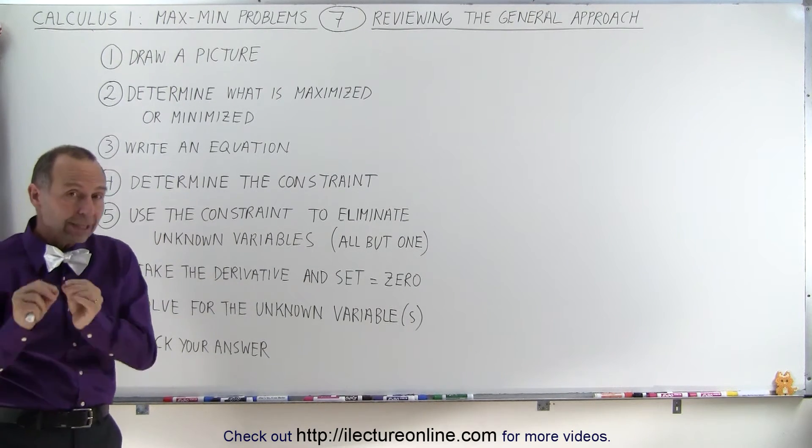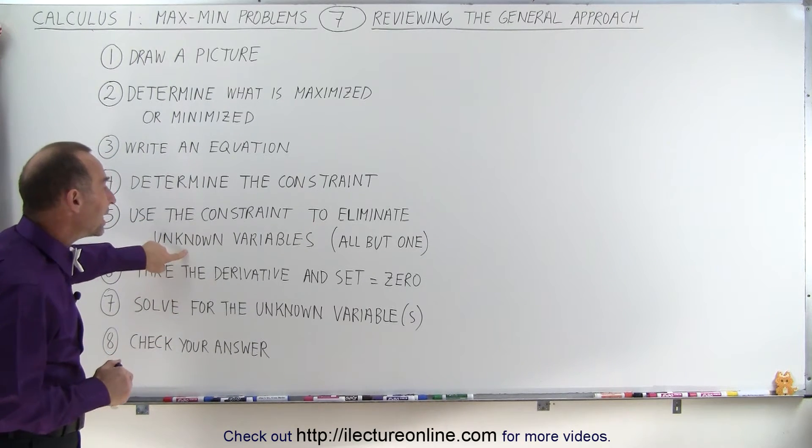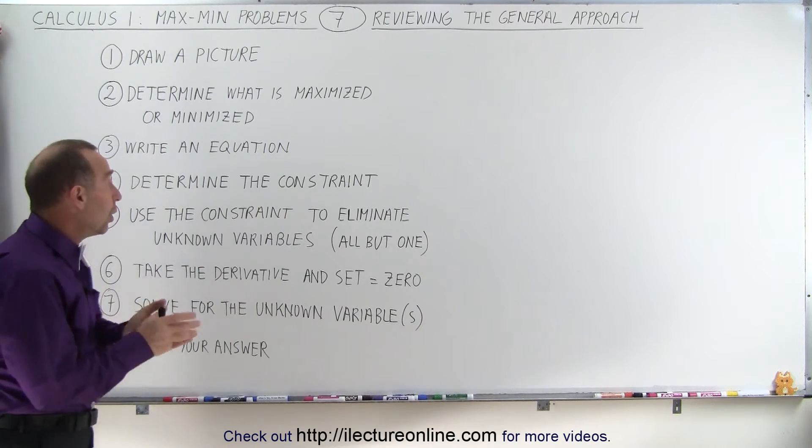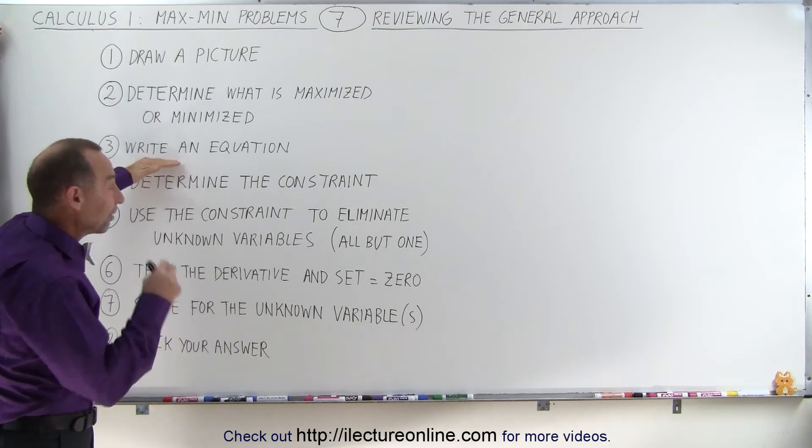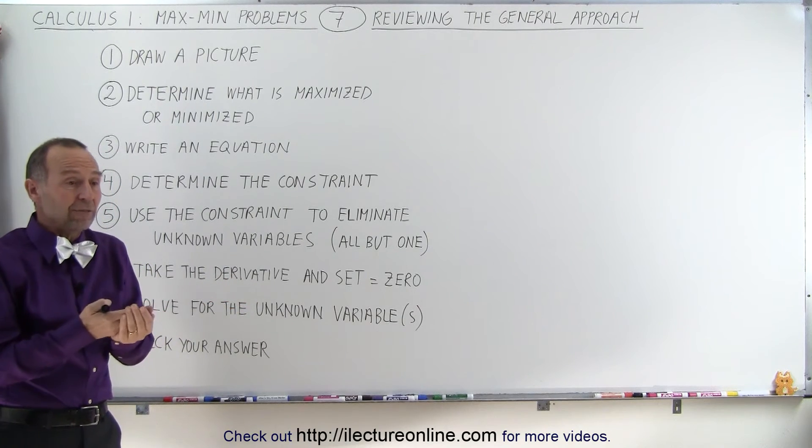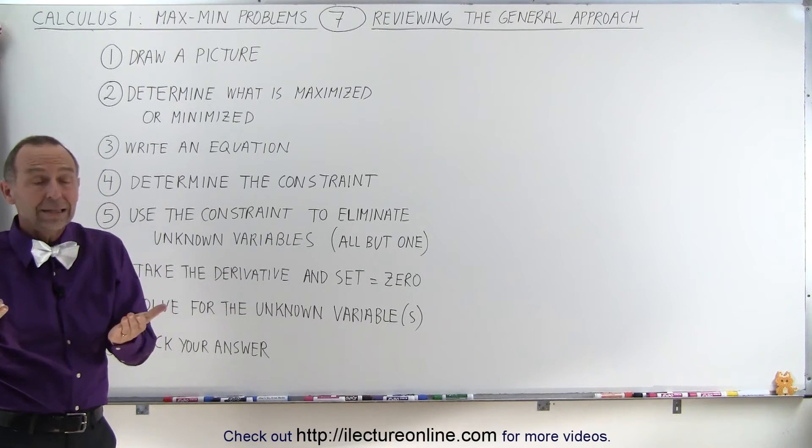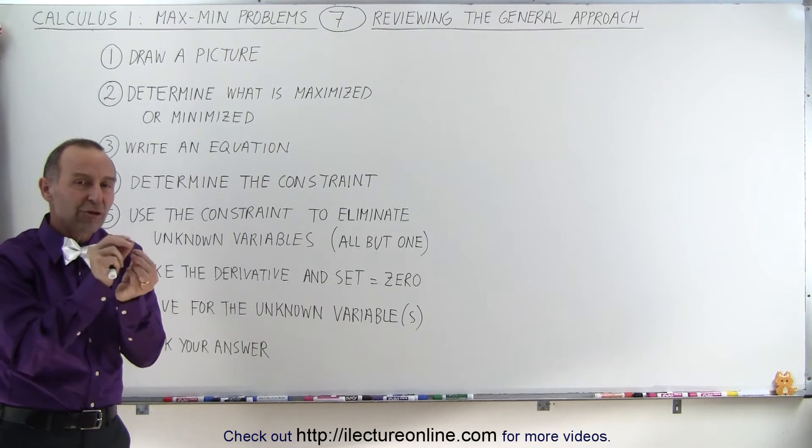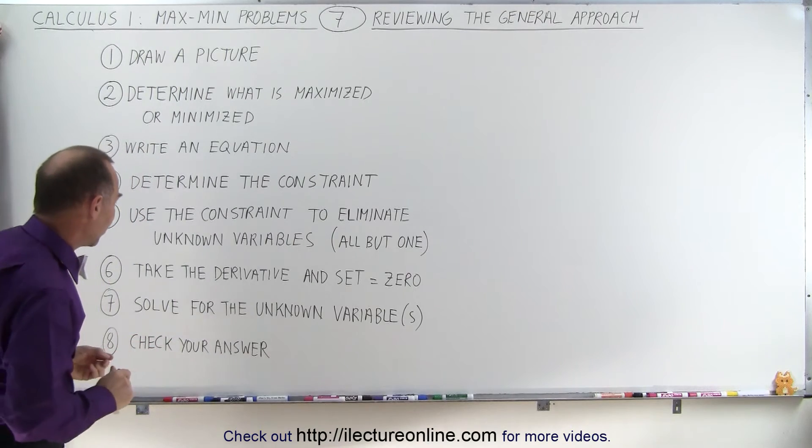Once you determine that constraint, you then use it to eliminate some of those unknown variables because you ultimately want to write the equation as a function of a single variable. For example, if the volume is a function of the length, the width, and the height, you want to eliminate two of those three variables so you can write the volume as simply a function of one of those three variables.